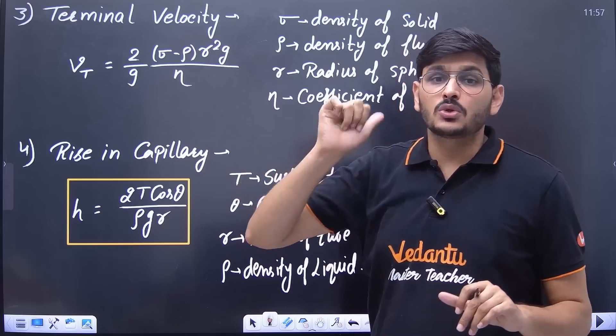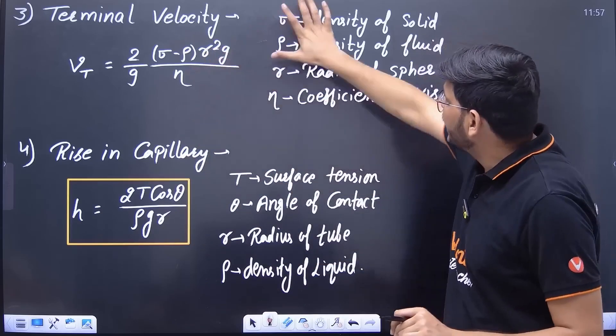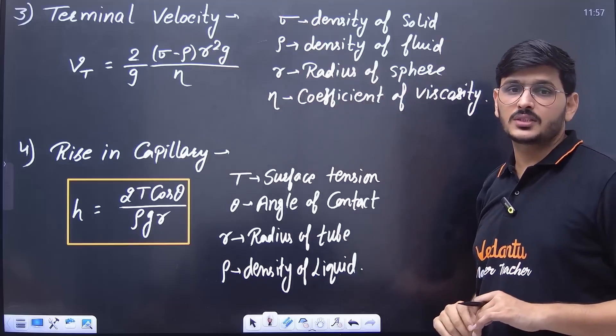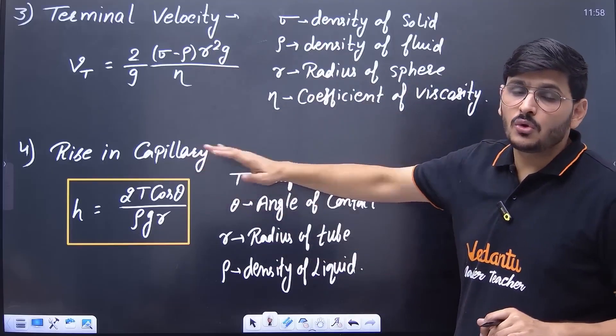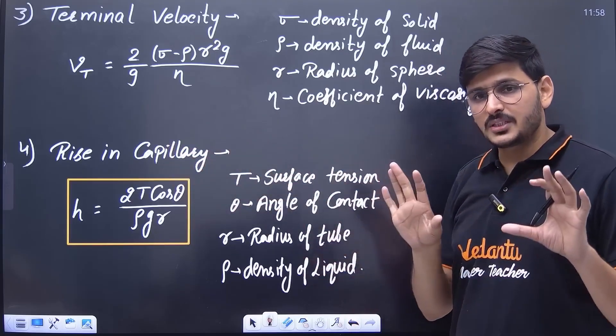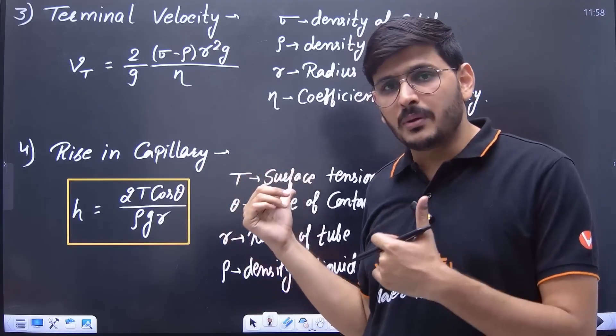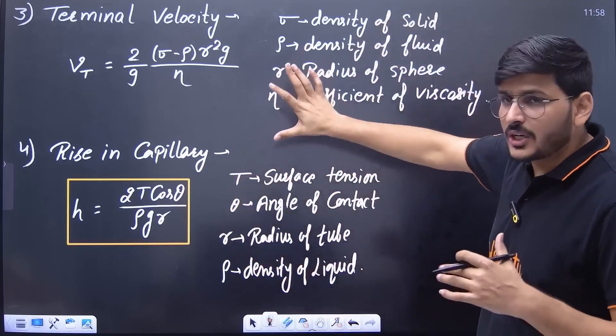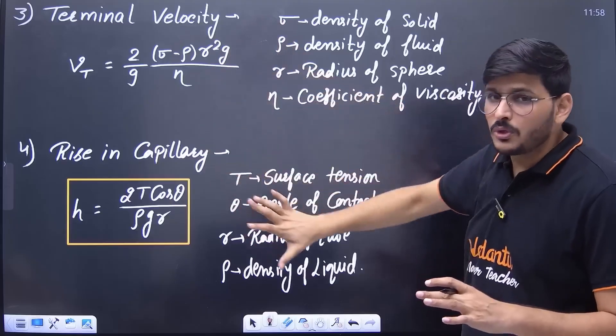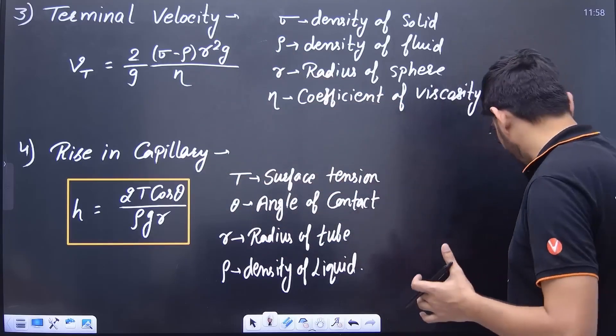Similarly, if I talk about the chapter on fluid, then the formula of terminal velocity is very important. This is a formula. These are its terms. It should be remembered properly. Similarly, we should remember the formula of capillary rise height. These are its different terms. You should save this proper PDF properly and I will also tell you where to get this PDF. So save it and memorize each formula by writing it down. It is very important.